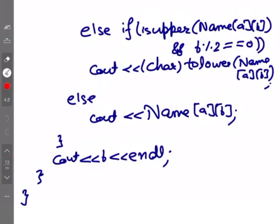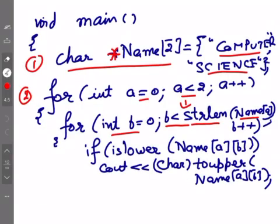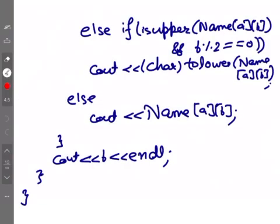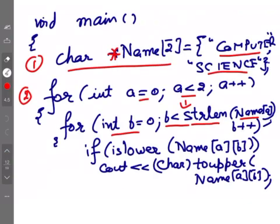Since both conditions are true (isupper and b%2==0), it does cout with tolower, converting the character to lowercase and printing it. So small 'c' is printed. It does not go into the else branch because it's an else-if. Then b++ makes b=1, and we go back to the top of the inner loop.